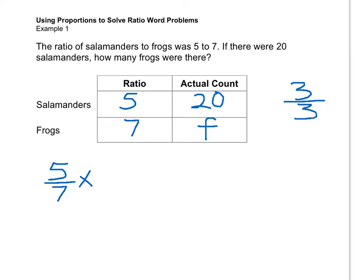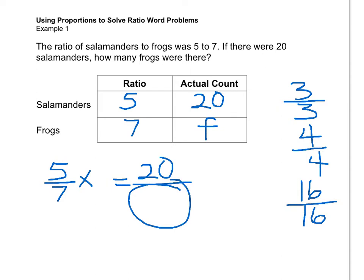So we could multiply 3 over 3, another fractional equivalent of 1 is 4 over 4, 16 over 16. Any time a fraction has a numerator and denominator the same, they're equivalent to 1. So how do we decide which one to multiply? We want a fractional equivalent of 1 that will result in a numerator of 20. So 4 over 4 works because 5 times 4 equals 20, and then we can do 7 times 4 equals 28. So the actual count is 28.